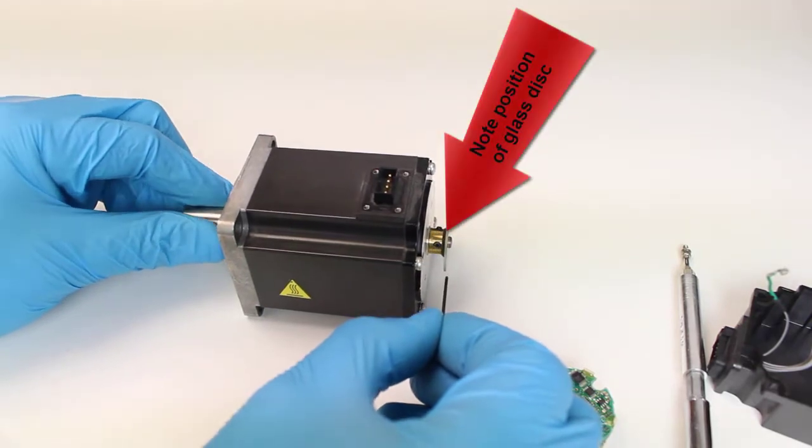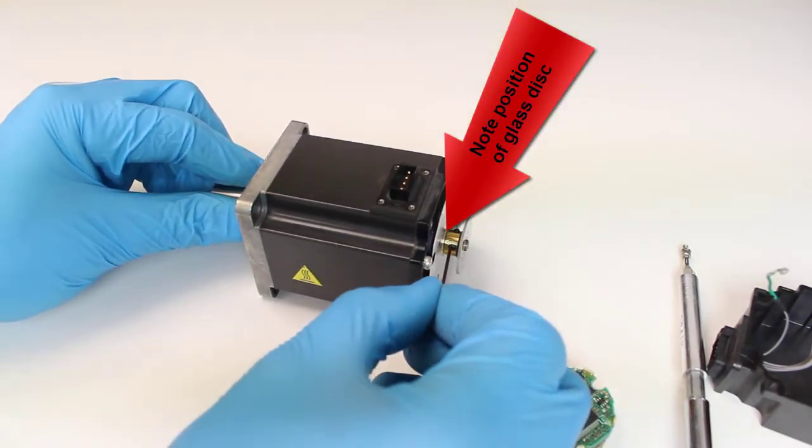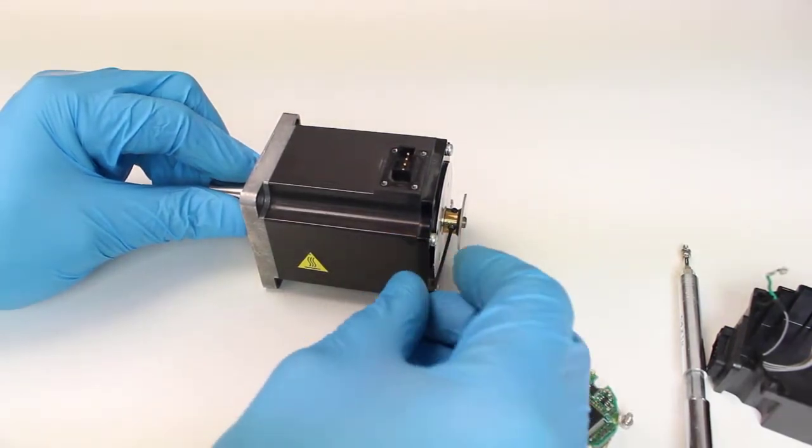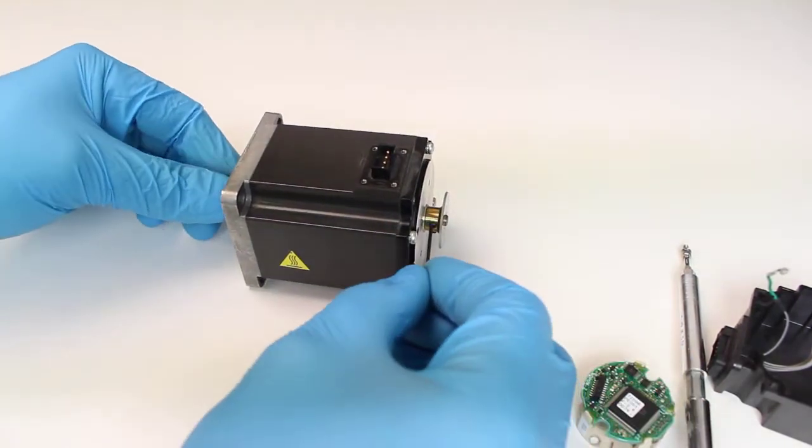Make sure to note the linear position of the glass disc relative to the motor shaft. Then loosen the two set screws and remove the glass disc.